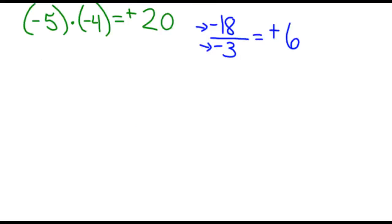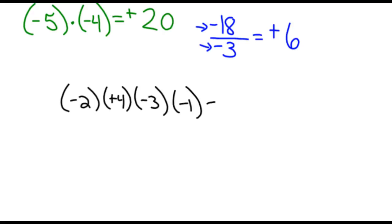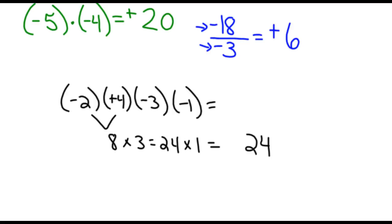Let's try one more problem. What if we wanted to do negative 2 times positive 4 times negative 3 times negative 1 — stringing a whole bunch of numbers together and multiplying them. Well, 2 times 4 is 8, 8 times 3 is 24, times 1 is 24. And now we need to decide if the answer is positive or negative. So we count the number of negative signs: we have 1, 2, 3 negative signs. 3 is an odd number, and if we have an odd number of negative signs, our answer has to be negative. So we get negative 24 as a solution.